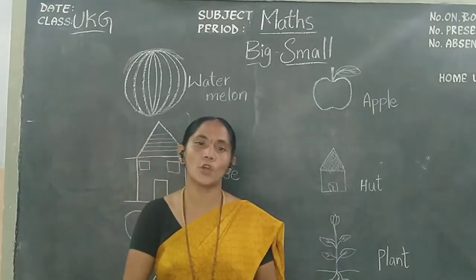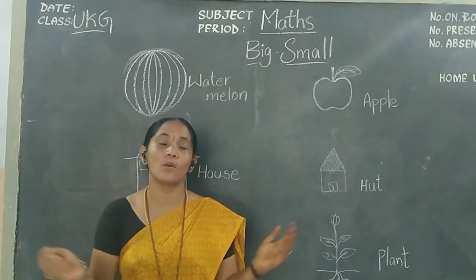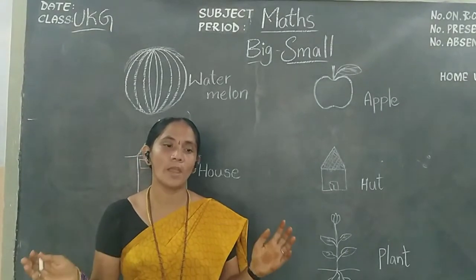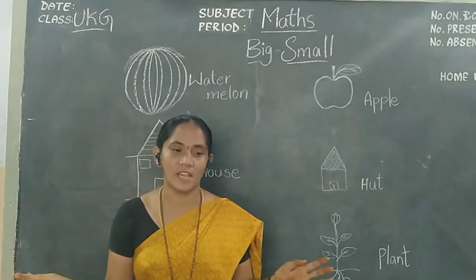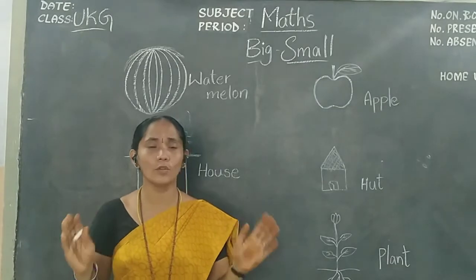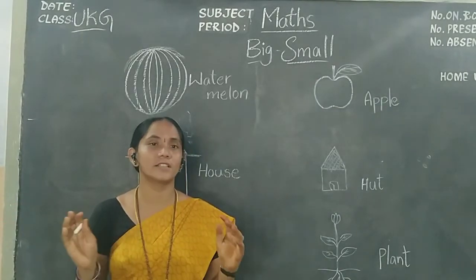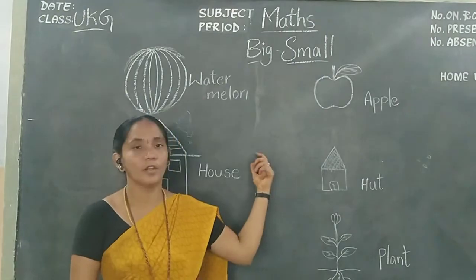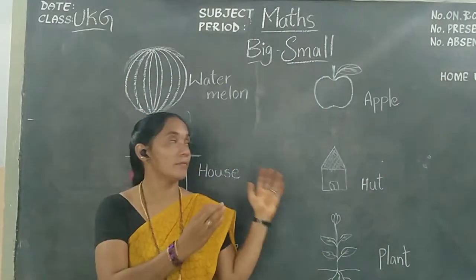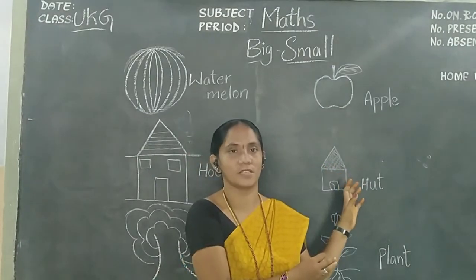We are seeing so many objects around the house. Some objects look big. Some objects look small. Okay children, look at the board. I draw here some big objects and some small objects.